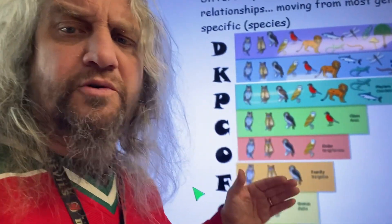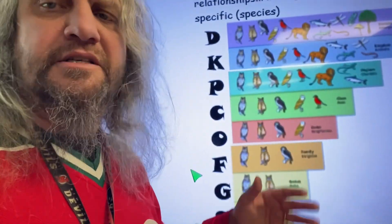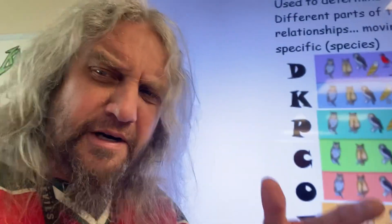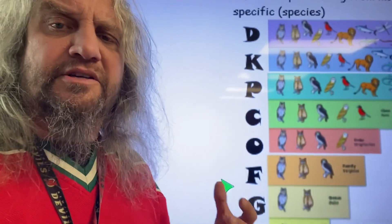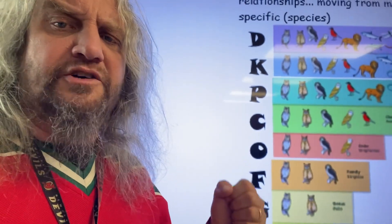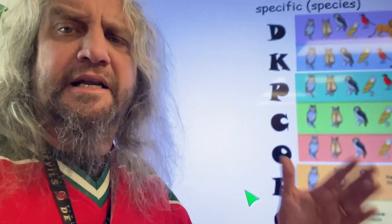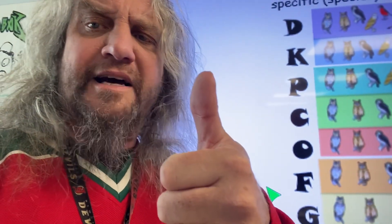Domain, kingdom, phylum, class, order, family, genus, and species — it's just a way of organizing the world. It's arbitrary; people made it up. No other organisms classify things like this. But it's a way to try to paint a picture of life on Earth based on evolutionary relationships. Let's do our Friday class.